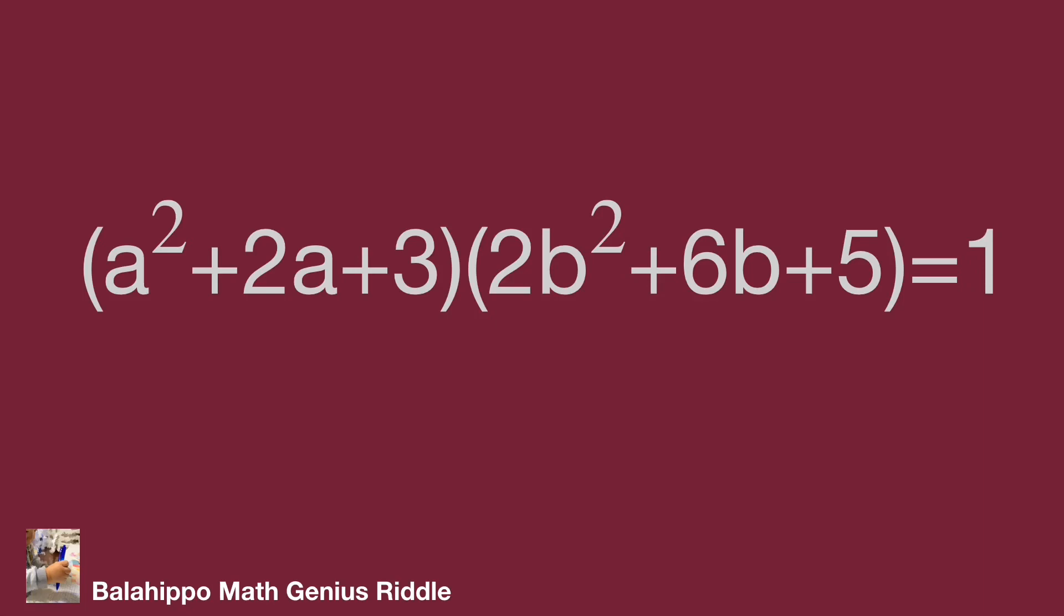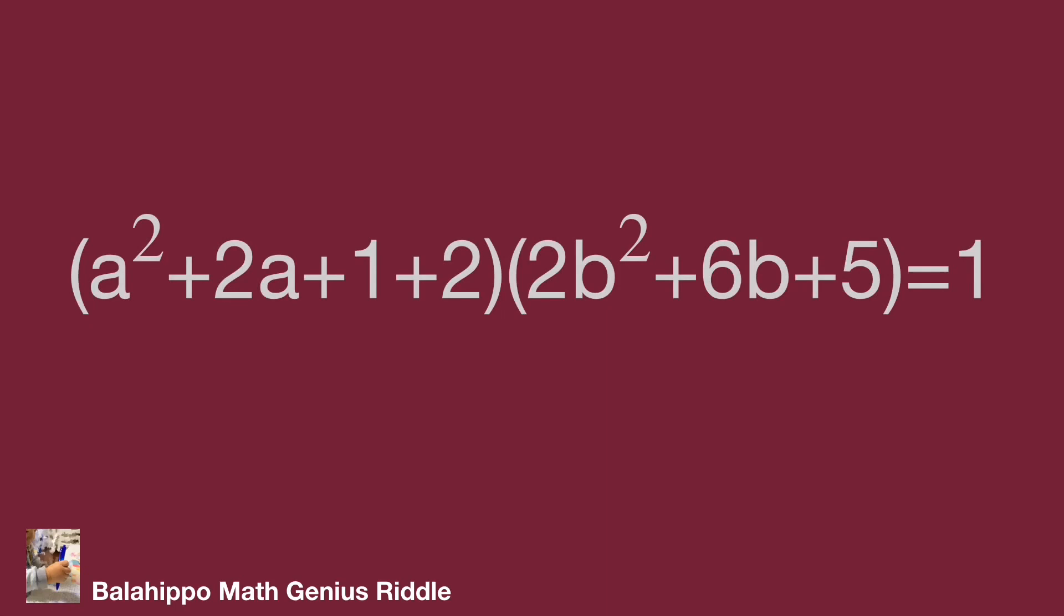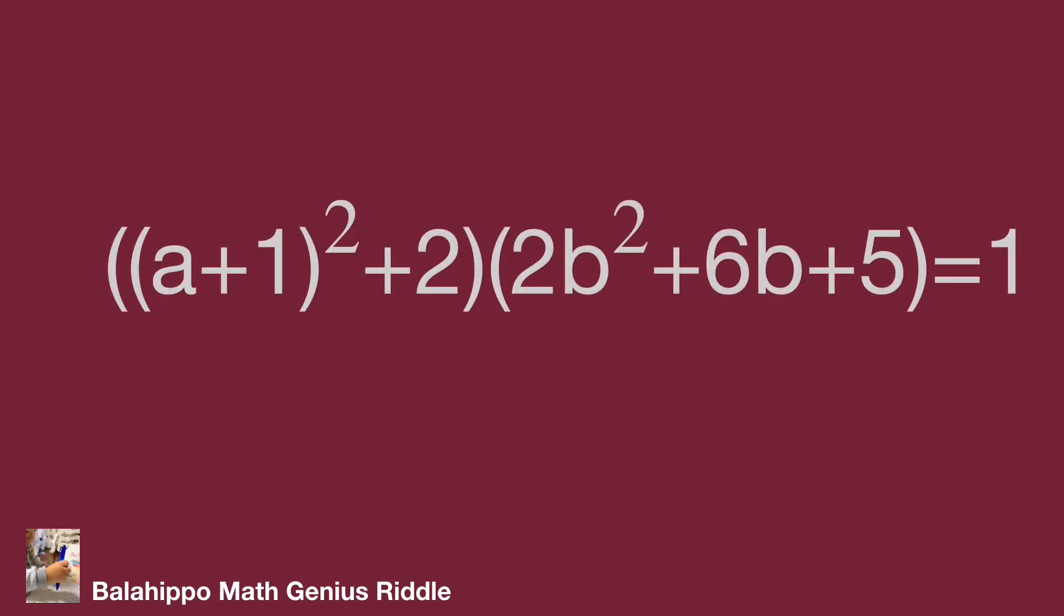So distribute 3 to 1 and 2. Let a² + 2a + 1 as one group, 2 as the other term. Then the first quantity becomes (a + 1)² + 2. It is positive.